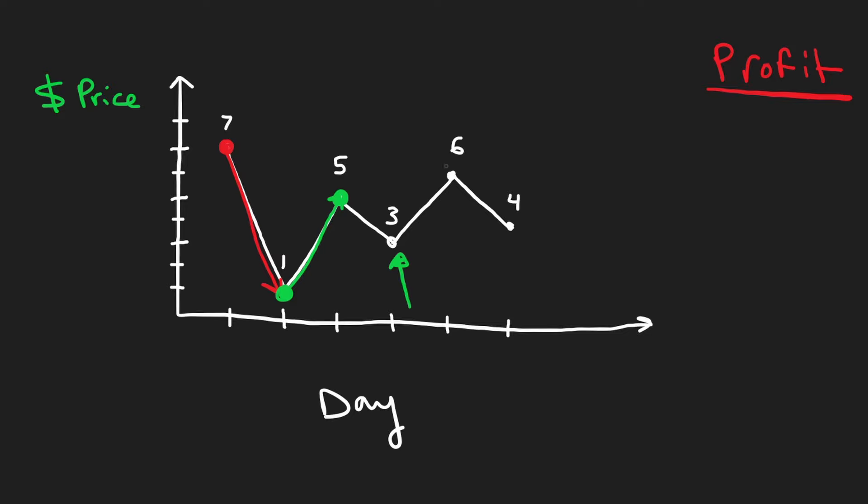Buy low, sell high. This is basic stocks, but if only if it were this easy in real life. So we sell high. But so we bought at this day, then we sold at this day. What was the profit of this transaction?